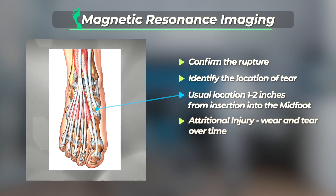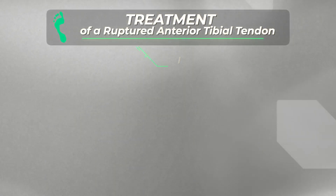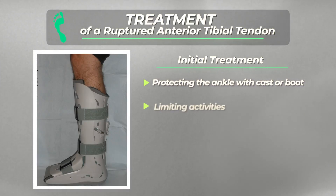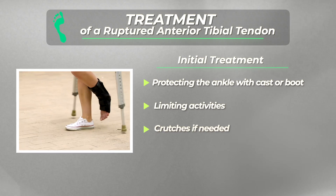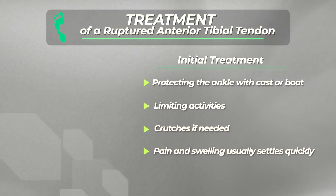Because this injury is usually an attritional rupture from wear and tear, the actual tear of the tendon fibers is usually not a clean tear. Rather, the torn tendon often ends up looking like the end of a mop with many torn fibers of different lengths. Initial treatment of an acute anterior tibial tendon rupture involves protecting the ankle with a cast or boot and limiting activities. Crutches can be used if weight bearing is difficult. Symptoms of pain and swelling will usually settle fairly quickly.